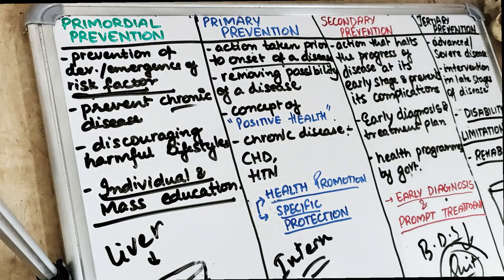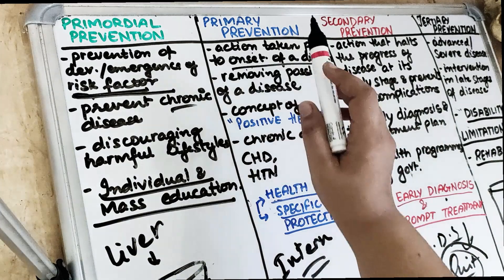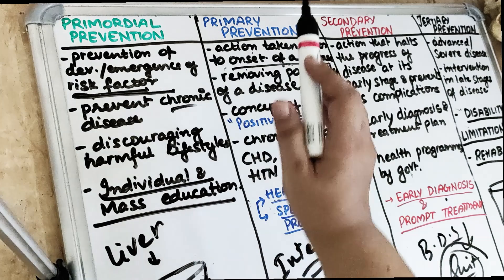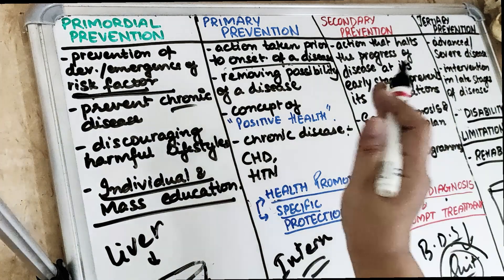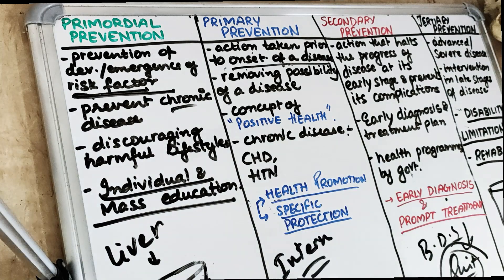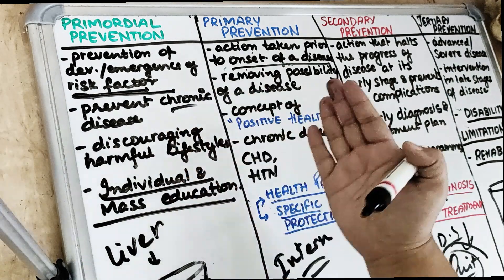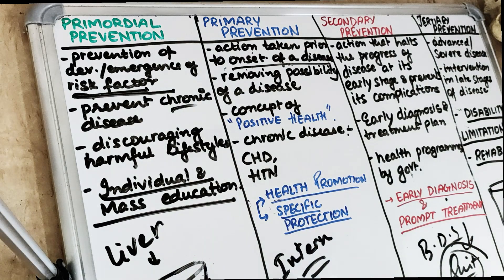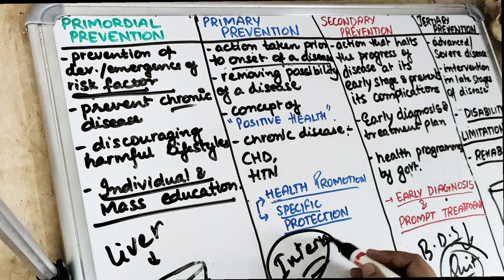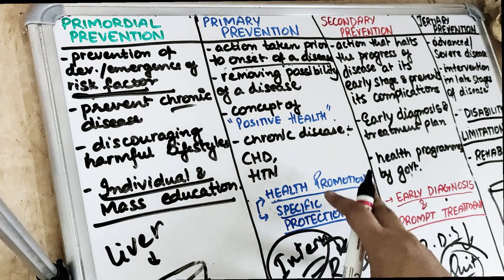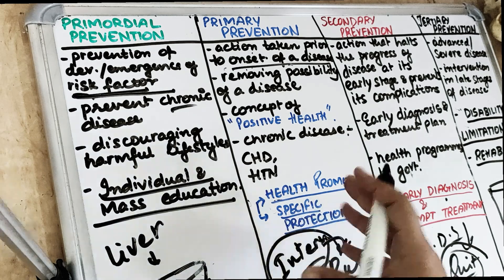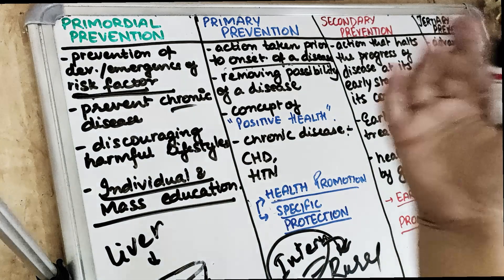Talking about the primary level of prevention: this is the action taken prior to the onset of the disease which removes the possibility of having the disease. We don't want the disease to occur so we are removing the possibility of the disease. For example, now that you are starting to go to parties, I send you for rural posting — that is a kind of primary prevention.